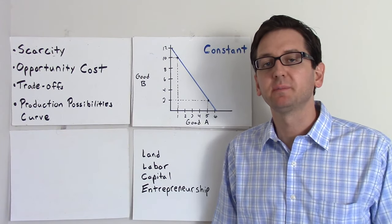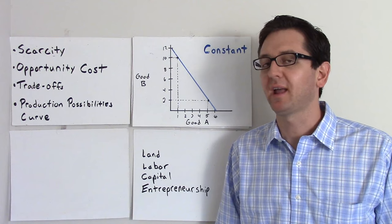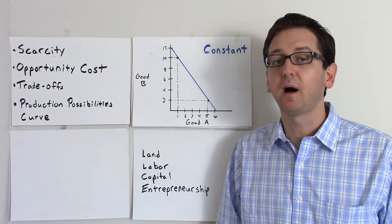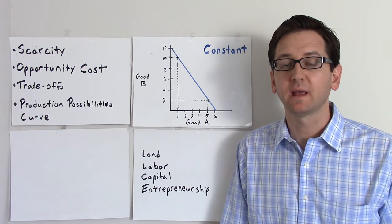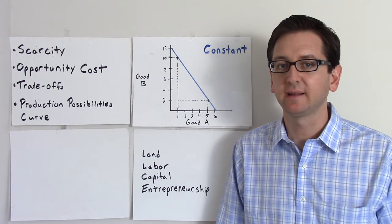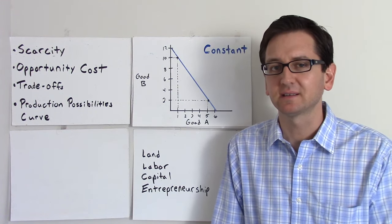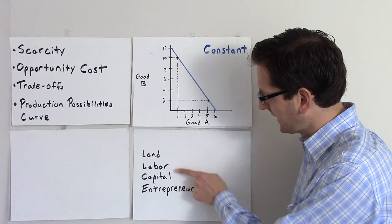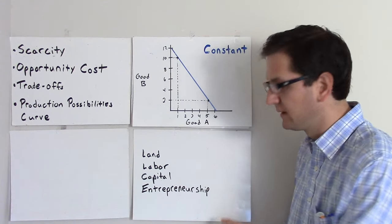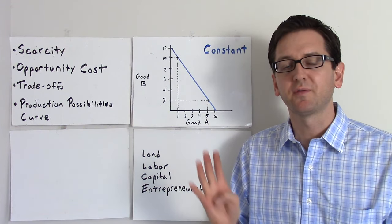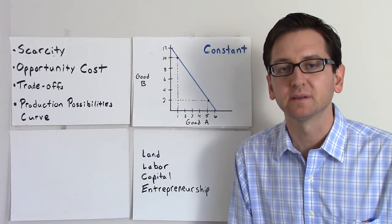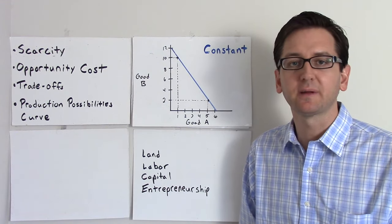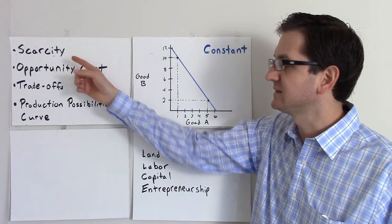In the immortal words of Mick Jagger, you can't always get what you want. We have unlimited wants but limited resources. And in an economic system, when we talk about resources, we're talking about land, labor, capital, and entrepreneurship — the four factors of production. And because these are limited, it creates a scenario of scarcity.